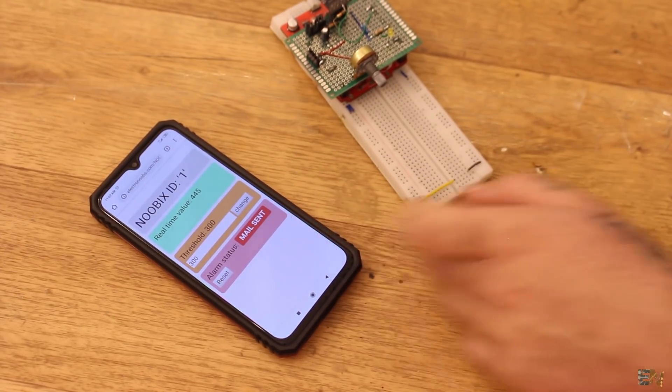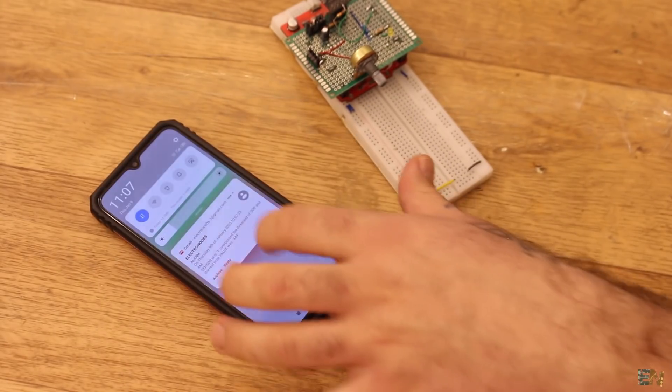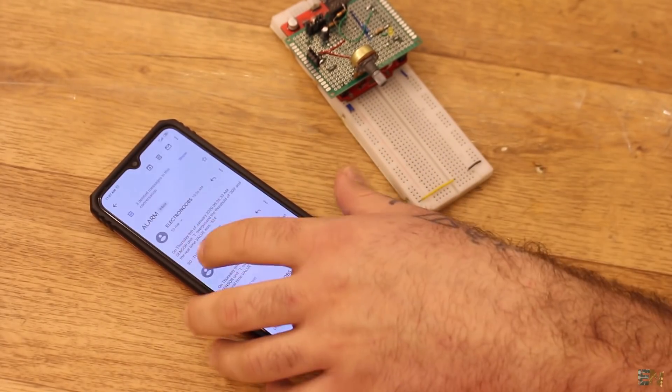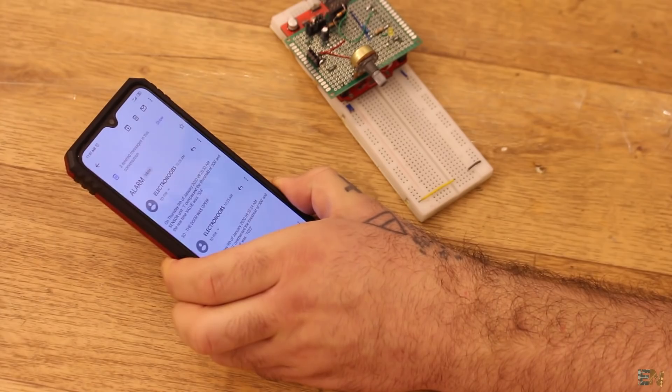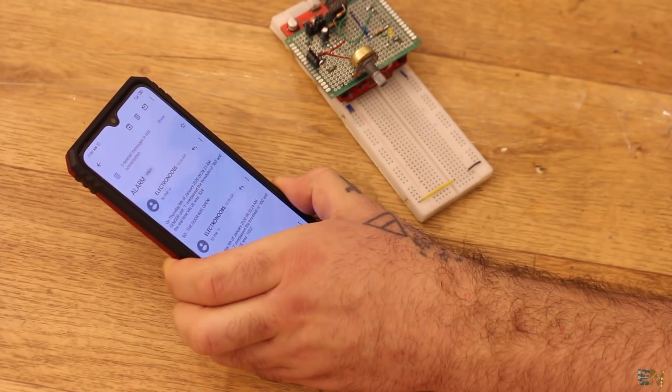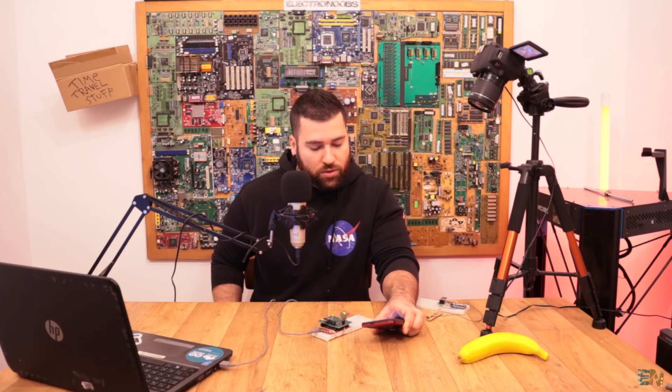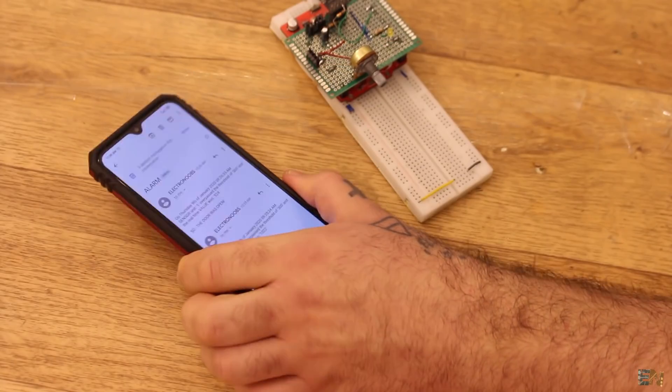As you can see, the label for mail sent is activated. So if we read the mail, we can see that on Tuesday 9th of January 2020, sensor unit 1 overpassed the threshold value of 300 and the real-time value was 524, so the door was open.